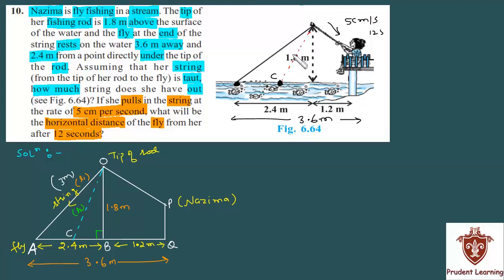This new part is L2, the new length above the water surface. Finally, we need to find this. In this figure, you have the new length and point C where the fly reaches after 12 seconds. We need to find the horizontal distance between Najima and the fly, which is CQ. BQ is already known as 1.2. If we find CB, then CB plus BQ will give us CQ.